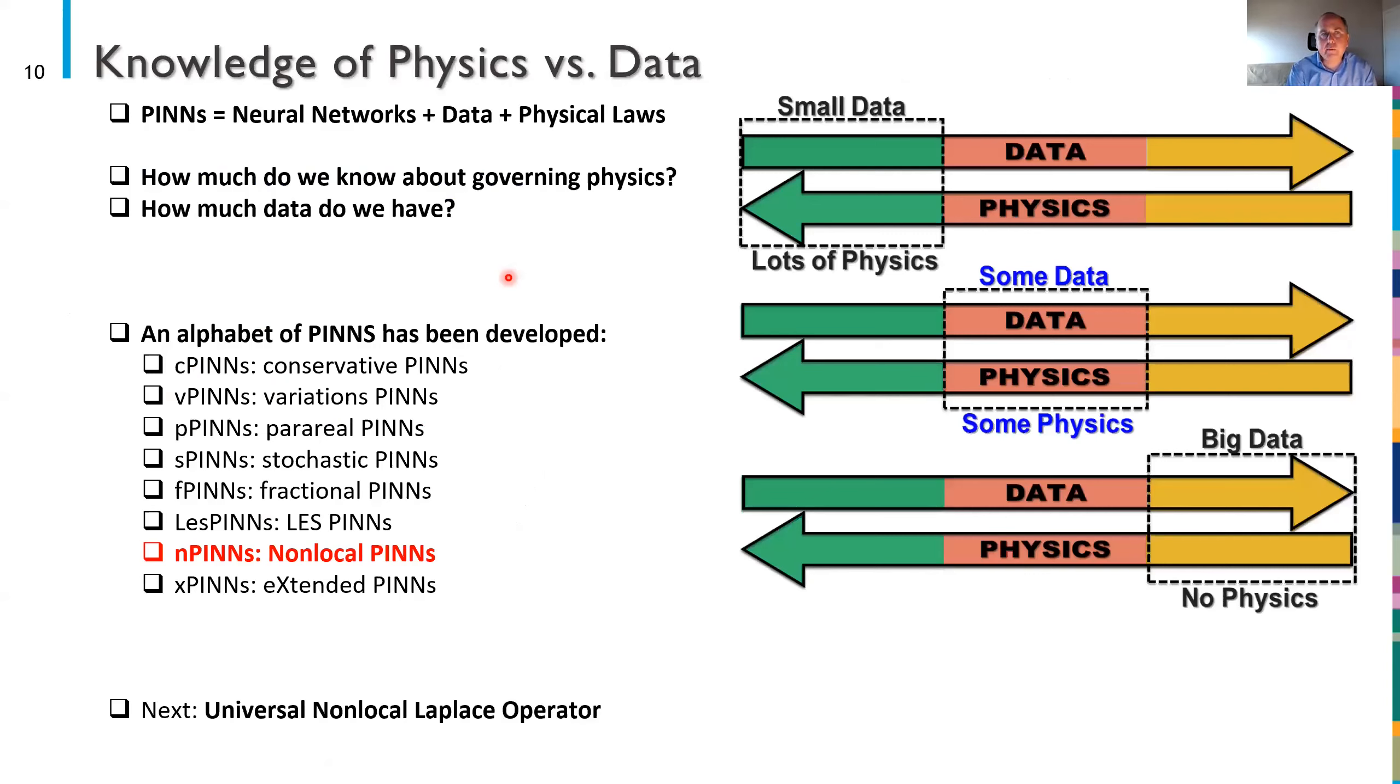So what are PINNs? PINNs are a combination of neural networks data and physical laws. Most of our time as computational scientists maybe we've spent in the diagram here on the right we've spent here on the top figure where we assume that we know all the physics or pretty much all the physics and we just need a few material parameters and some initial boundary conditions and we can solve that problem whatever it is. But with non-local models we might find ourselves maybe we're a little closer here to the middle where we know most of the physics but not all the physics but we can use data to discover the physics that we don't know.